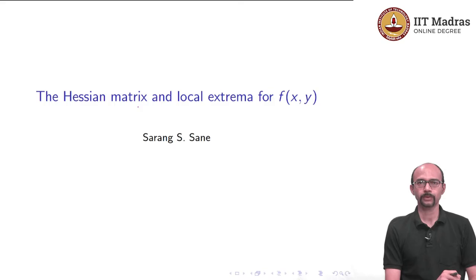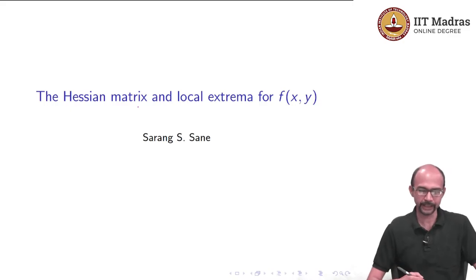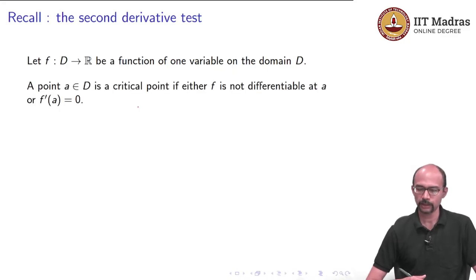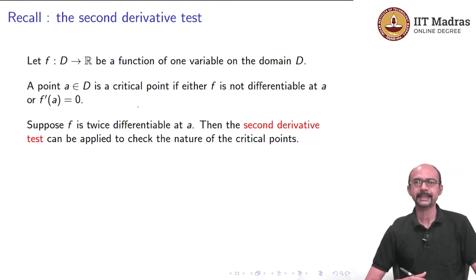We have studied the notion of critical points for f(x,y) and in a previous video we also studied the Hessian matrix, which consisted of the second order partial derivatives placed in a square matrix. In the context of f(x,y), this will be a 2×2 matrix. Let us recall first what was the second derivative test for a one-variable function. Suppose you have a function of one variable defined in a domain D. A point A in D is a critical point if either the function f is not differentiable at that point or f' is 0. And if the function is twice differentiable, we apply something called the second derivative test.